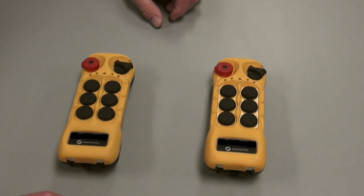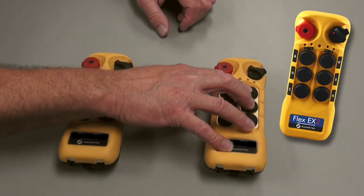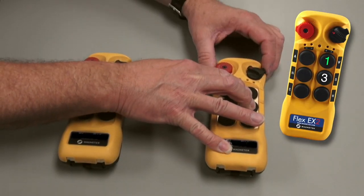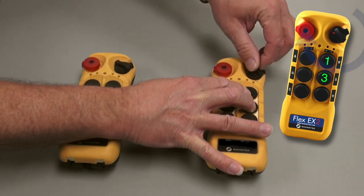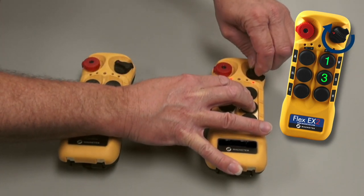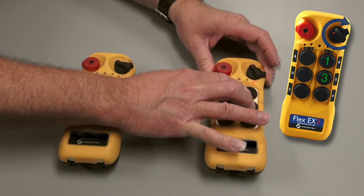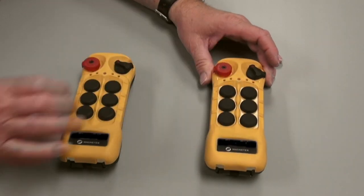We will now enable the transmitter's programming mode. To enable programming mode, we will depress buttons 1 and 3, then turn the key switch to the on position. To exit programming mode, the transmitter must be powered down.